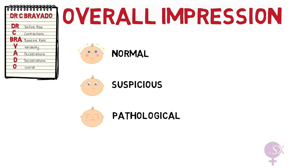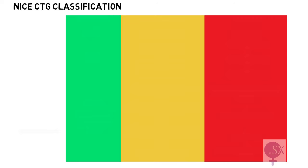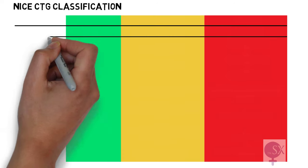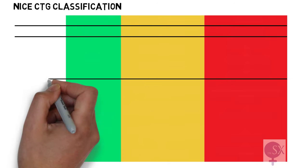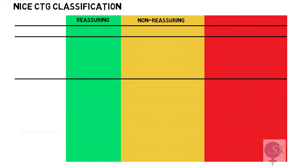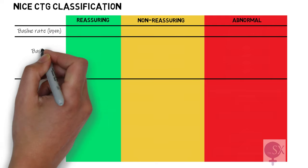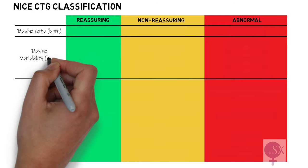To do this we first need to classify our individual characteristics according to the NICE CTG classification system. NICE divides the characteristics into reassuring, non-reassuring, and abnormal. We're going to be looking at the baseline rate, the baseline variability, and decelerations.